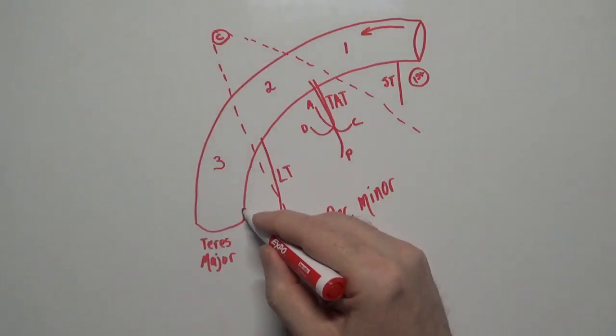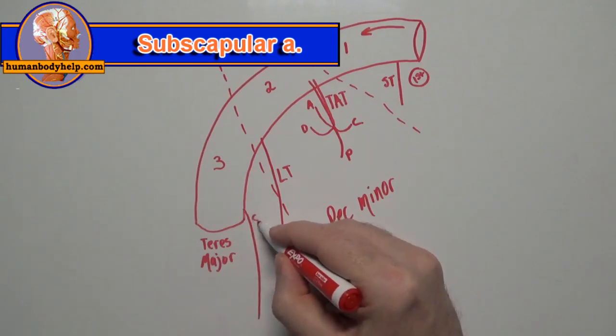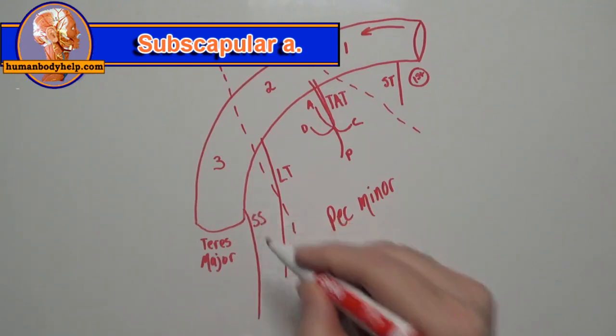Off the third part of the axillary artery, we'll have a branch called the subscapular artery. This is usually the largest branch off the axillary artery.